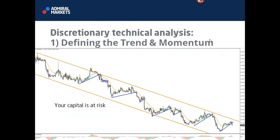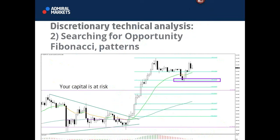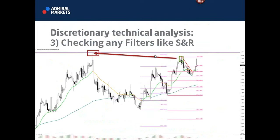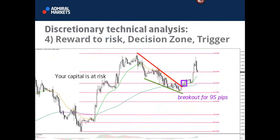Good morning. Hope you had a great weekend. Today we're going to take a look at the majors using trend lines. The four steps I use to tackle analysis are: first, defining the trend and momentum — trend channels are useful for trends, trend lines for momentum and correction. Then looking for an opportunity like a fib, pattern, or trend line. Then looking at filters like strong support and resistance levels. Finally, identifying the zone to trade, how to trade it, and what reward-to-risk is available. It's all about finding the trade, planning the trade, and trading the plan.